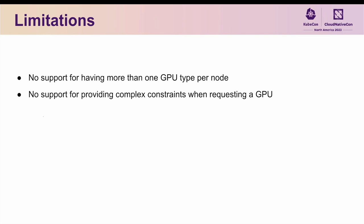One of the most requested features we get is the ability to ask for a GPU subject to some complex set of constraints, such as its minimum CUDA compute capability and/or the total amount of memory it has available. Unfortunately, node labels are not sufficient to encode all of the constraints that users find useful, and attempting to encode them in the name of the resource itself has the same problem mentioned previously with supporting more than one GPU type per node.